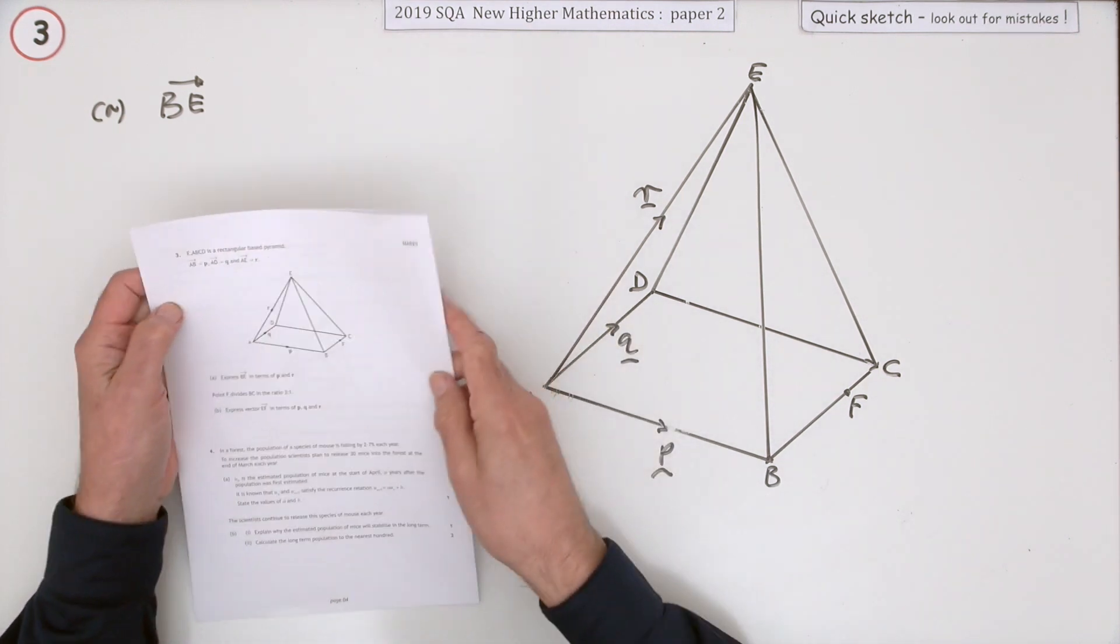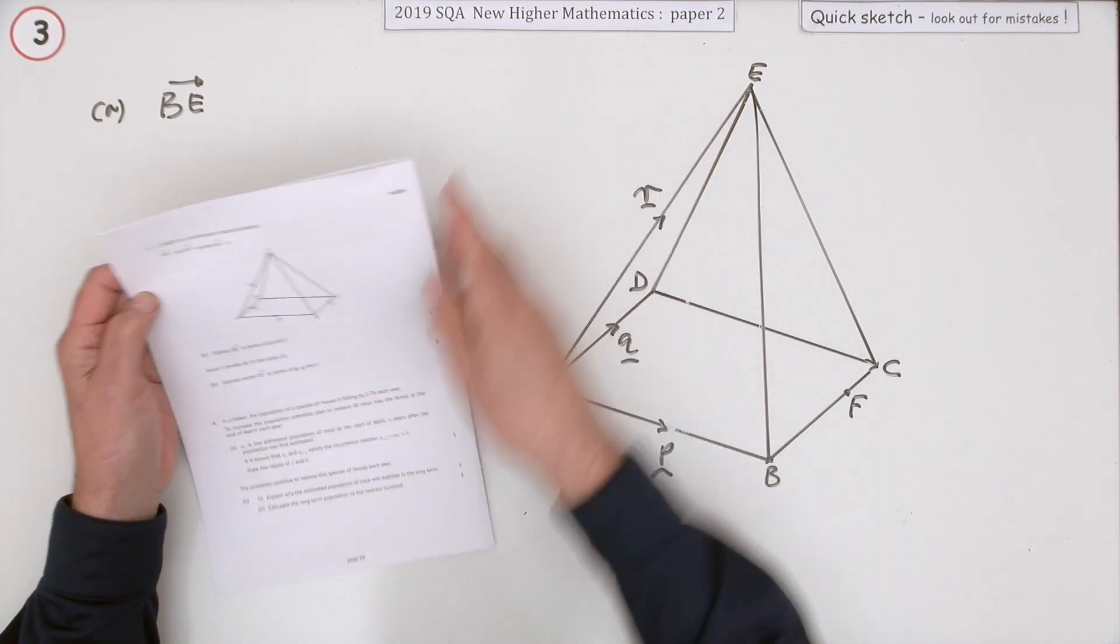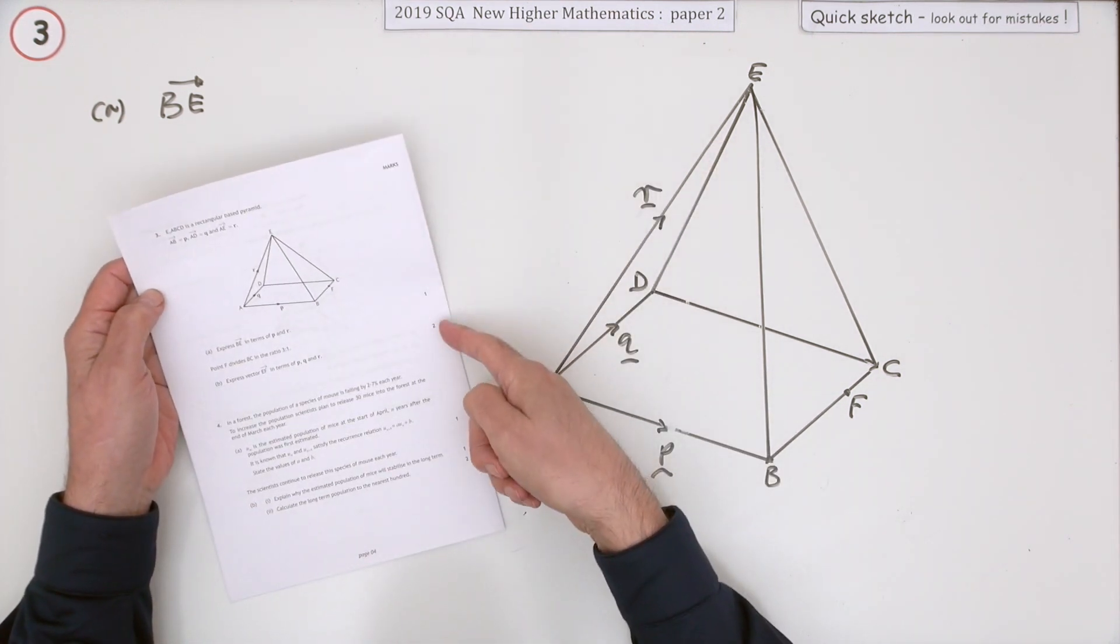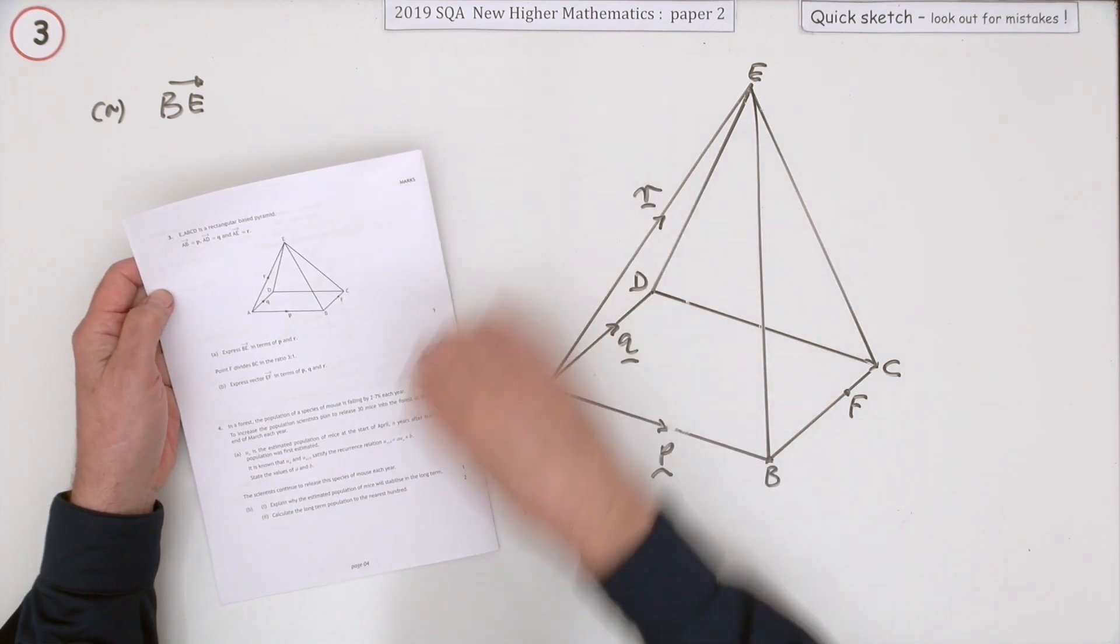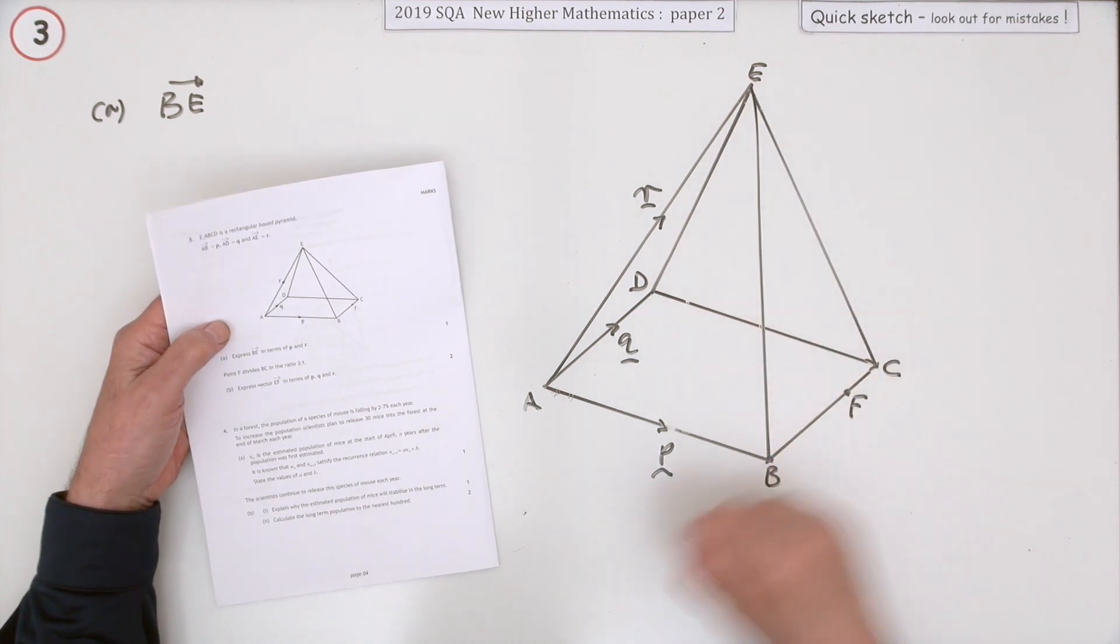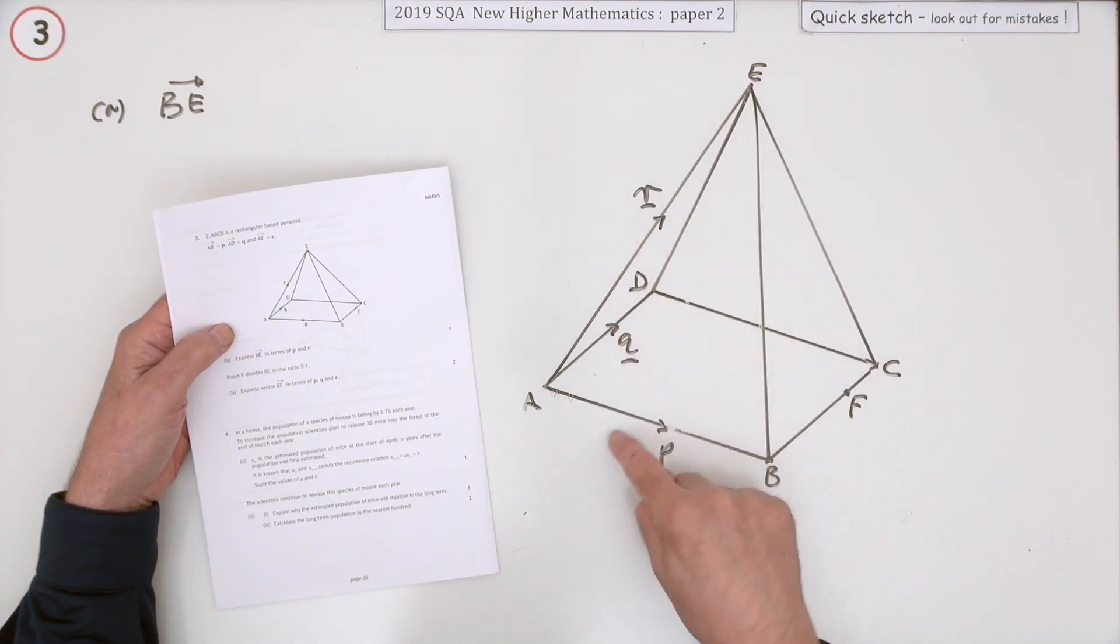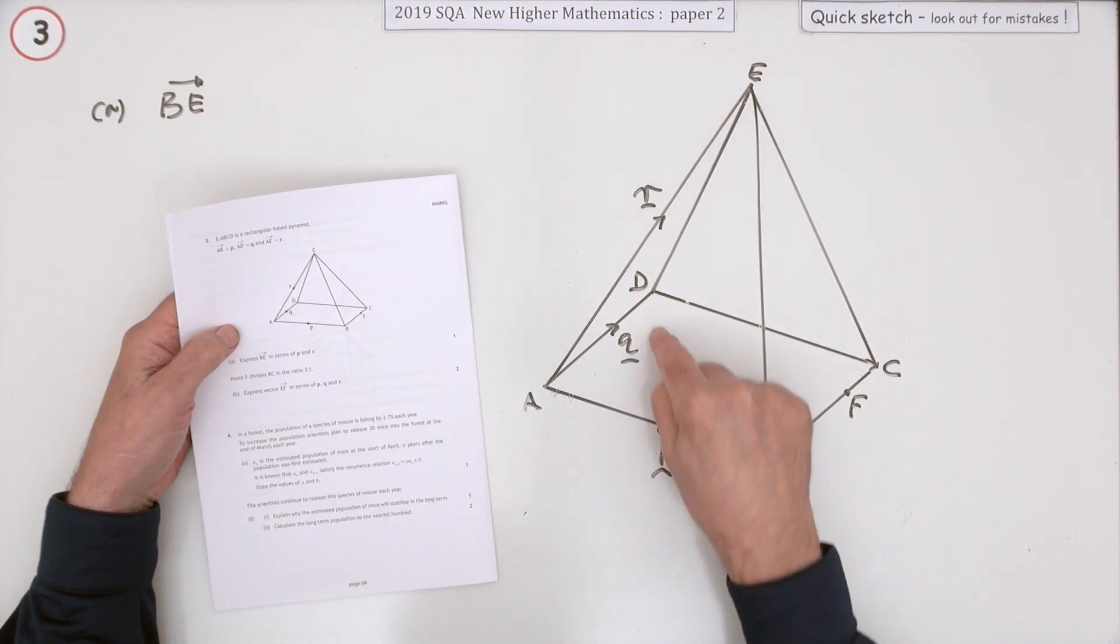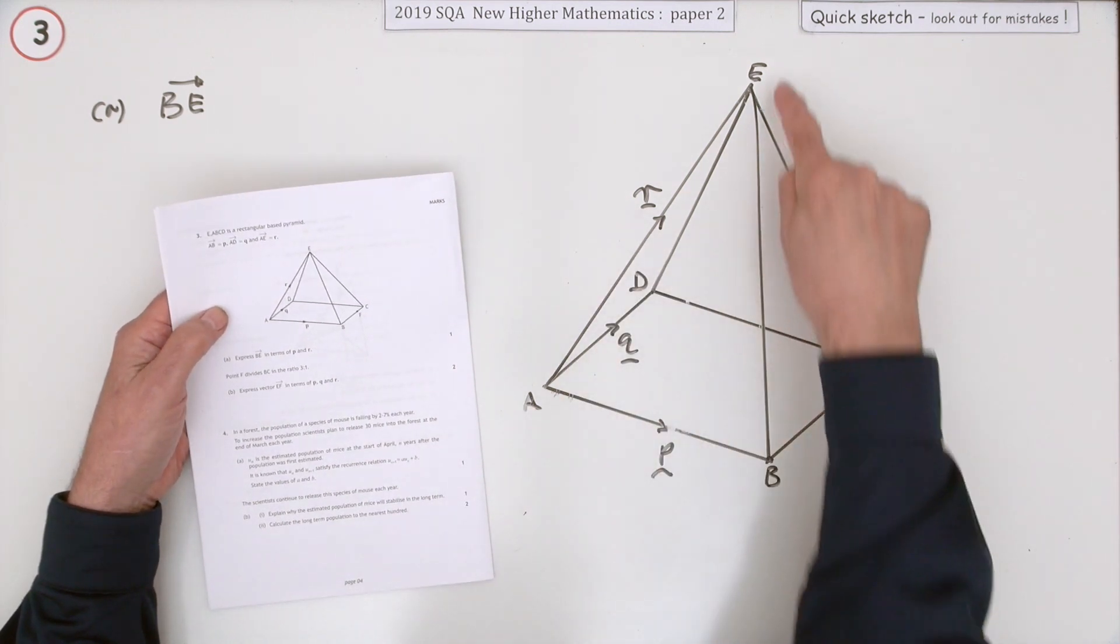Number three then from the 2019 paper two Higher Maths, a little three mark question on vectors. It's vector pathways. You're given this framework here where three of the edges have been assigned vectors and you have to find your way from one vertex to another.